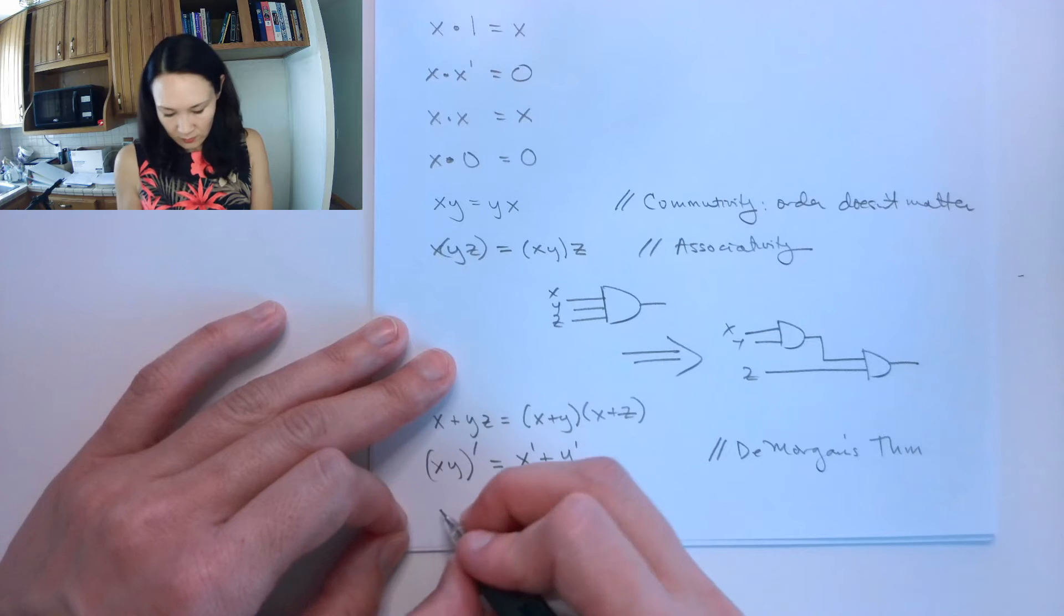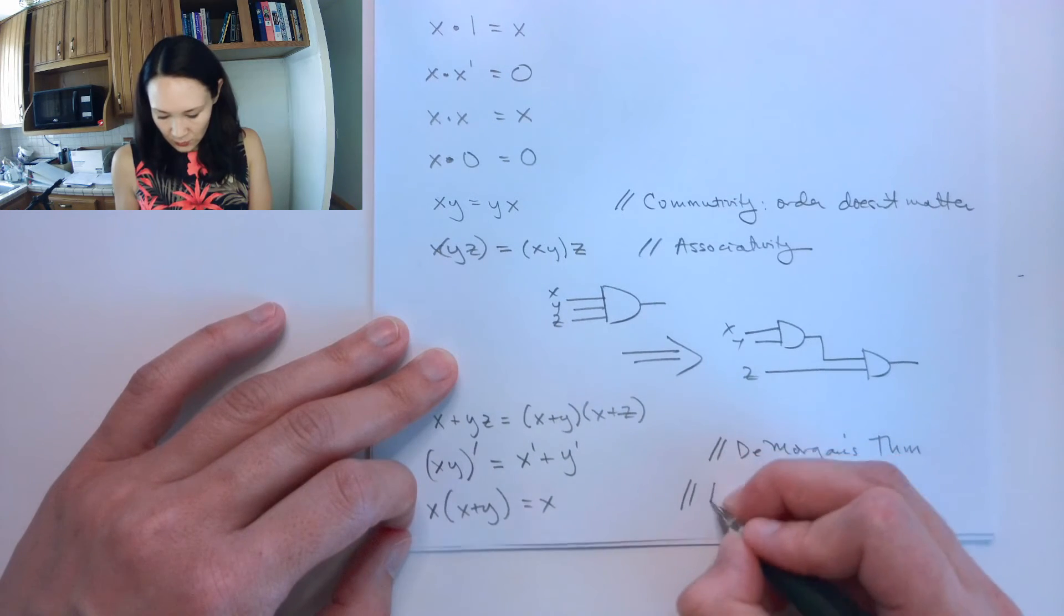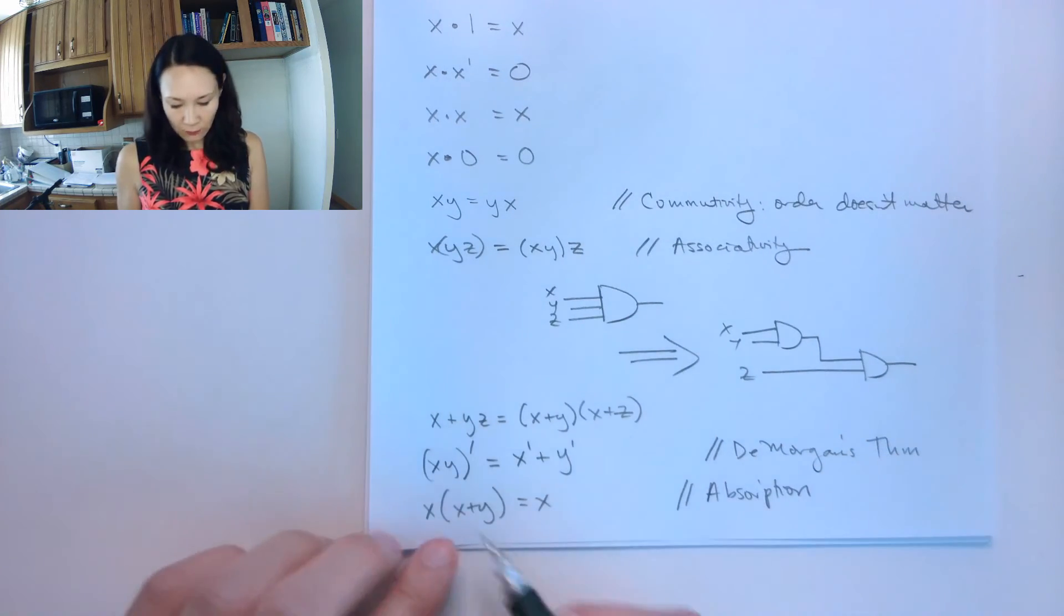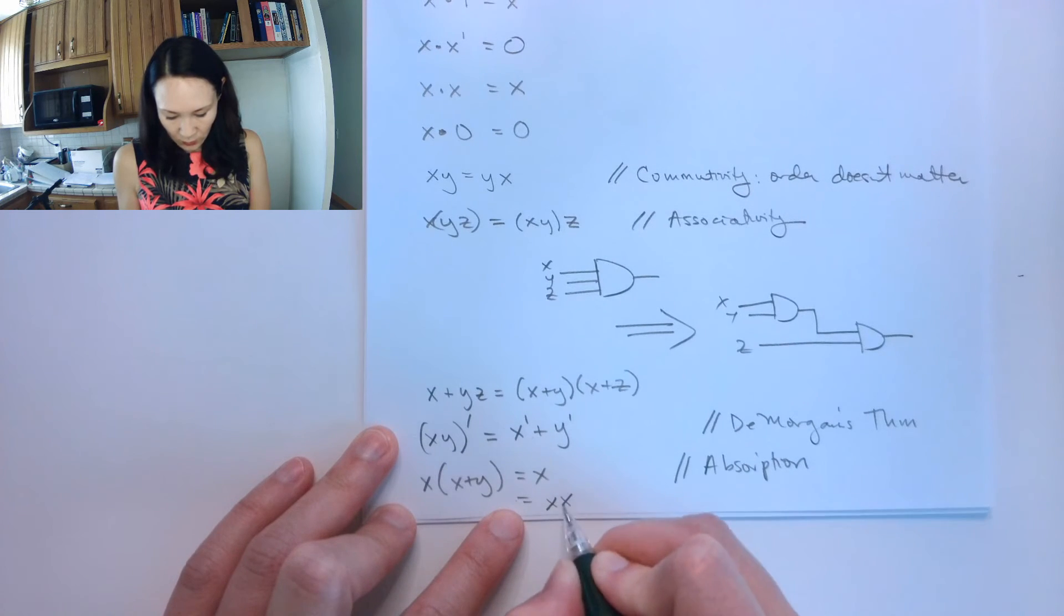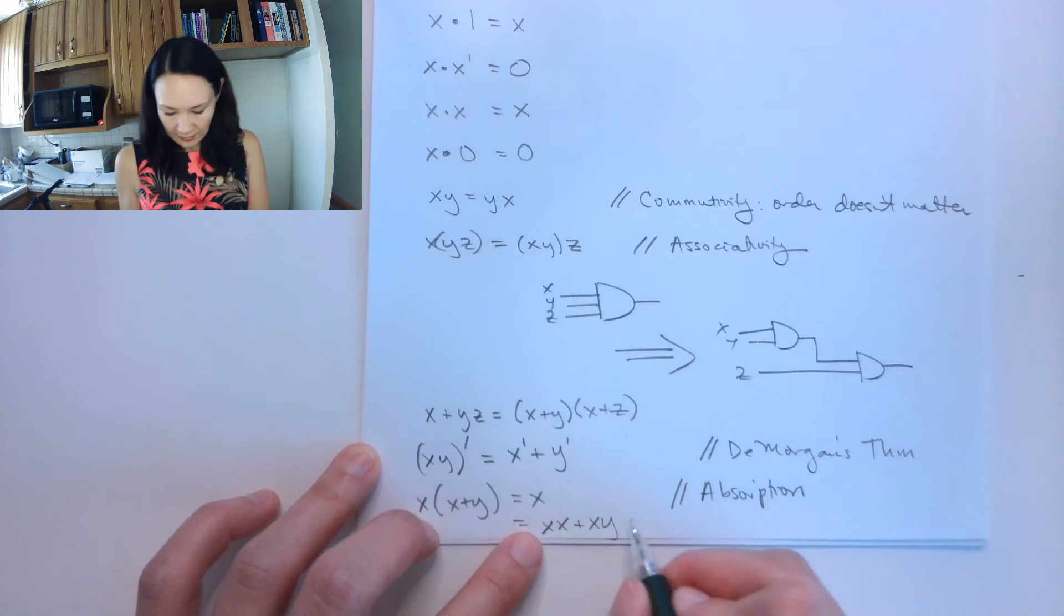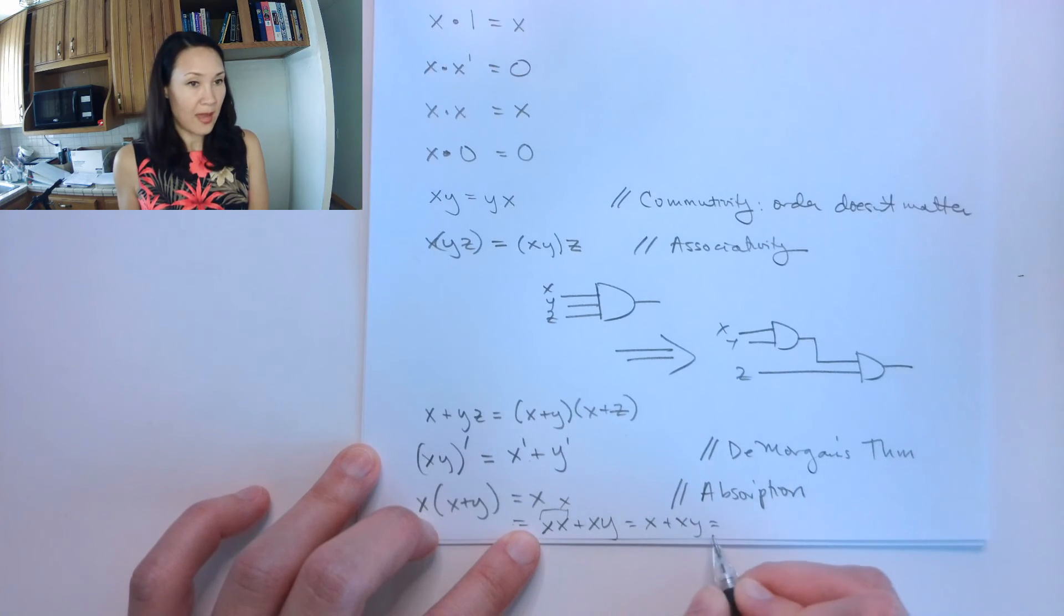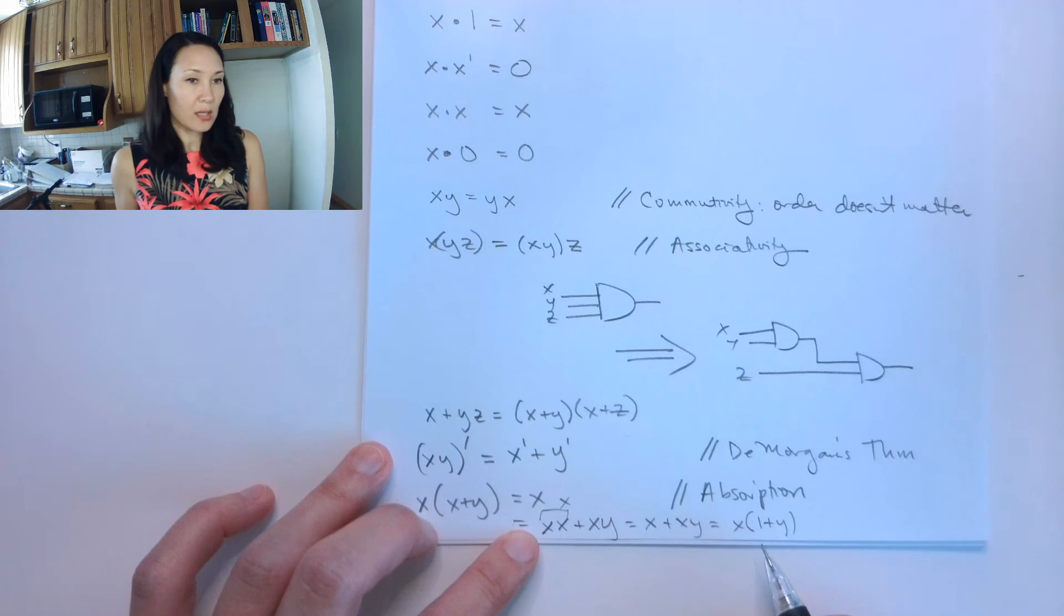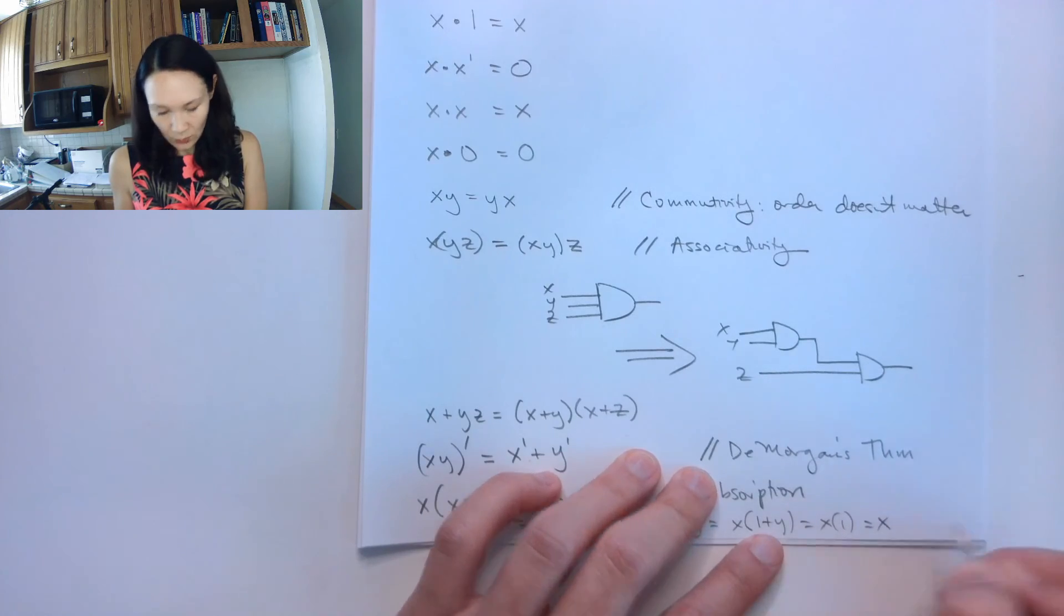And then the next one is x ANDed with x ORed with y is just equal to x. This one is called absorption. If you imagine if we distributed this x here on the left-hand side, this would give us x ANDed with x, OR x, y. Recall that x ANDed with x is just equal to x. So this would be x OR x, y. If we factor out the x here, this gives us x ANDed with 1 OR y. We know from our identities of the OR function that 1 ORed with anything is just equal to 1. So this is x AND 1, which is just equal to x.